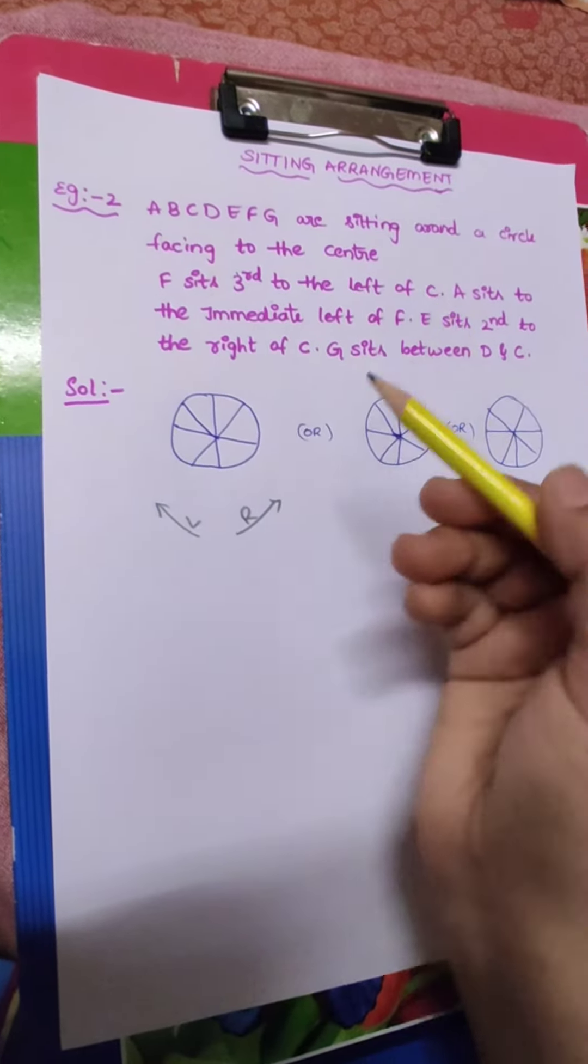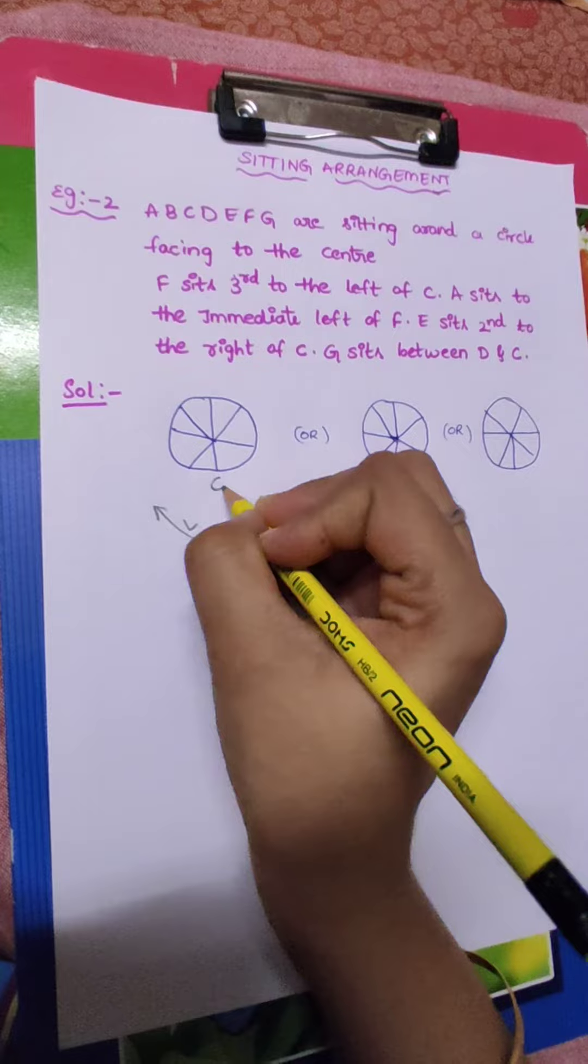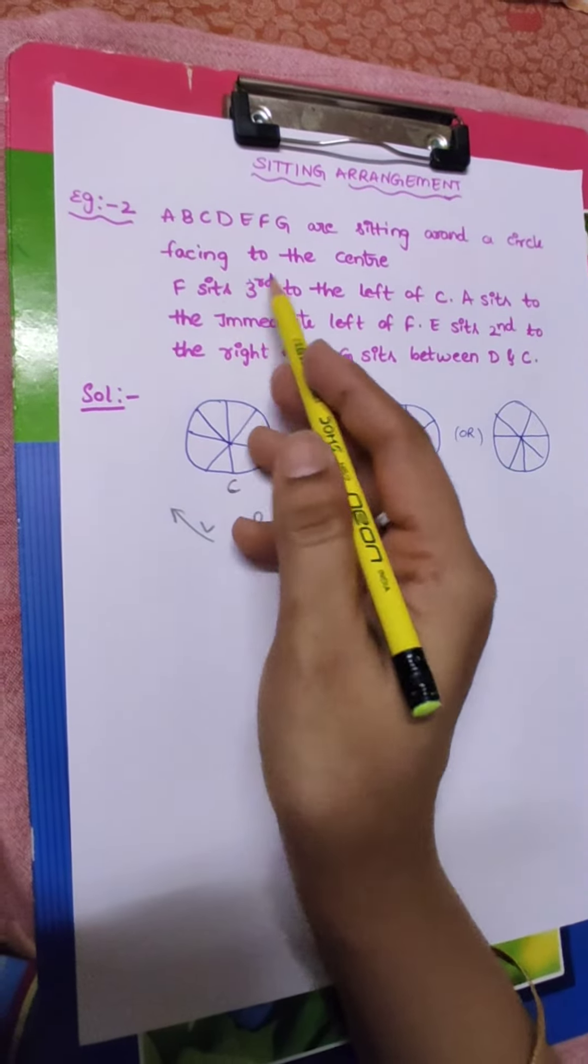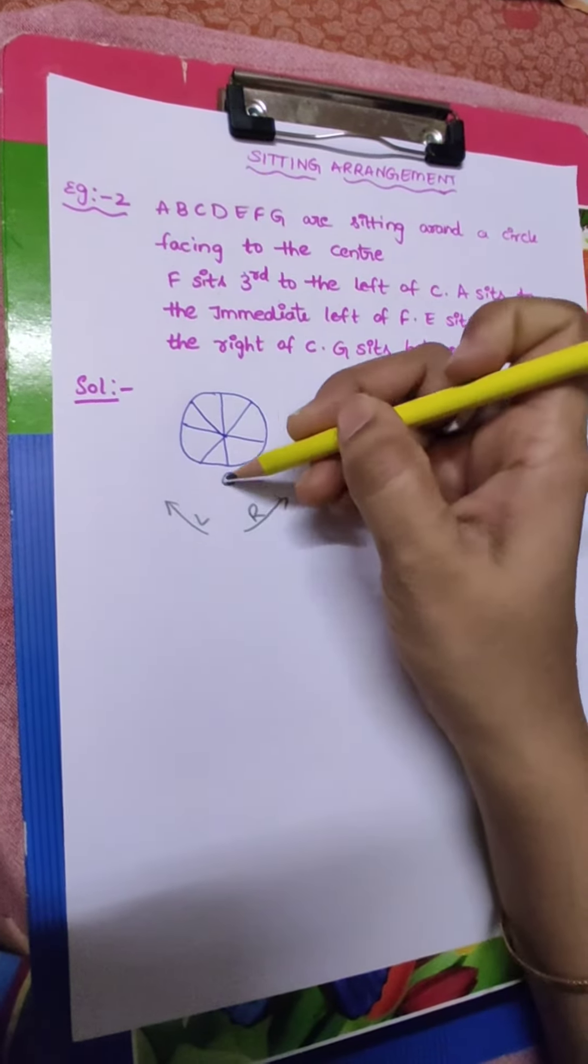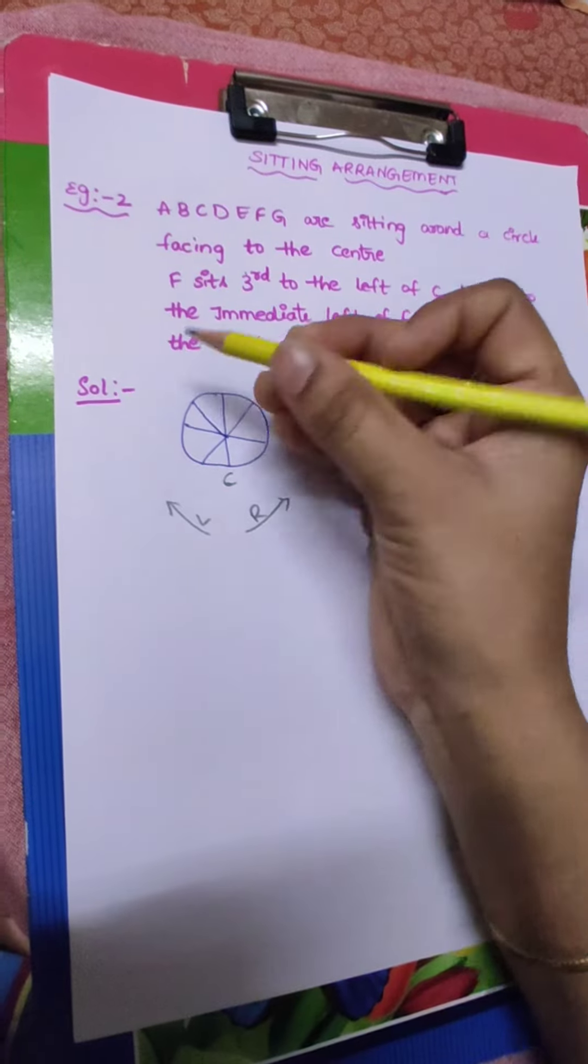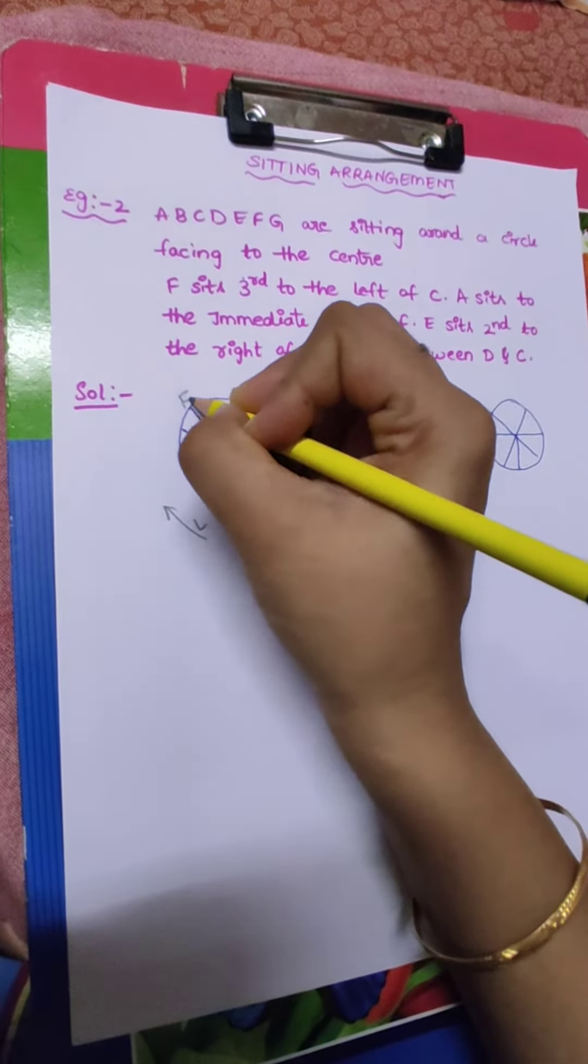F sits third to the left of C. C I am taking here. F sits third to the left of C - first left, second left, third left. So F.